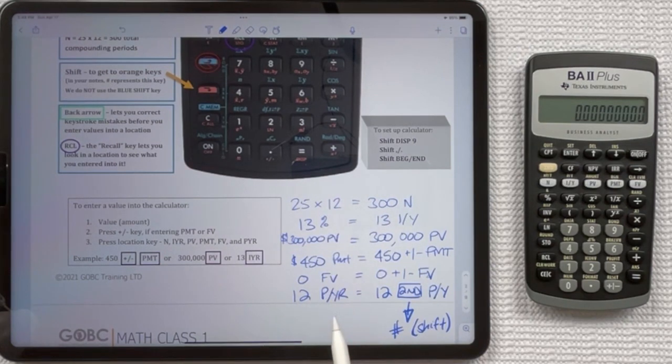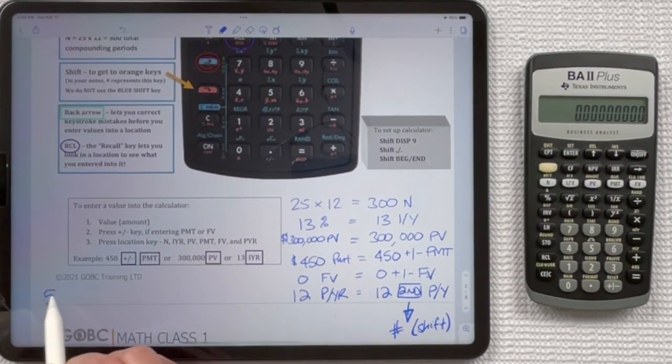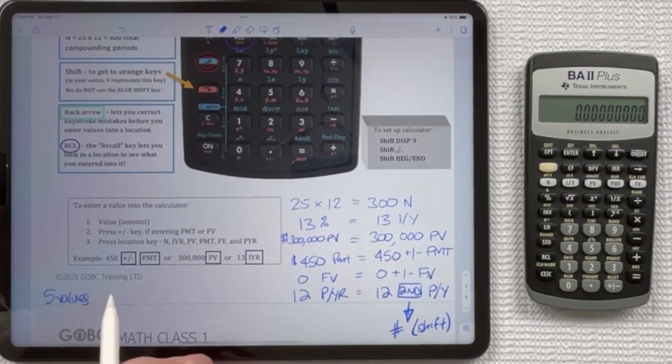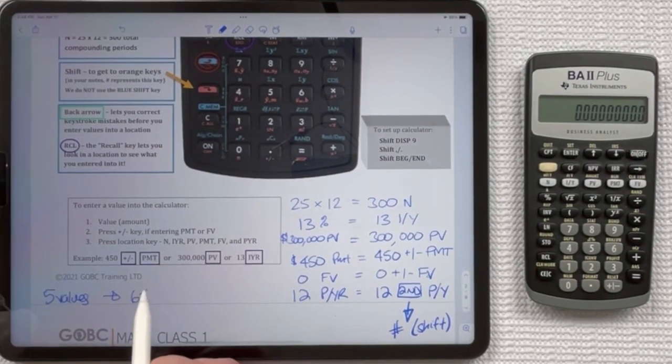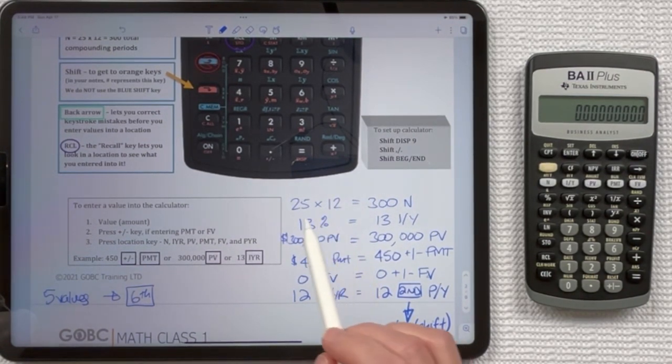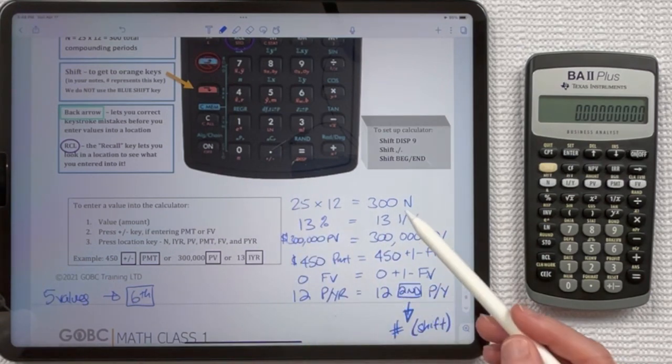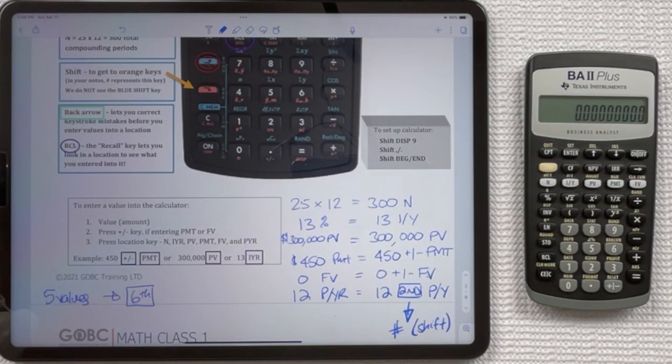I'm just going to show you how to enter something into each one of the locations. Now remember, you're always entering five values to get the sixth. So you're going to enter five values and you're going to push the button for the sixth. You would never be entering six into the calculator for the same question.